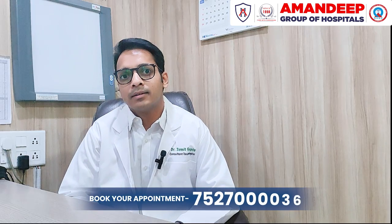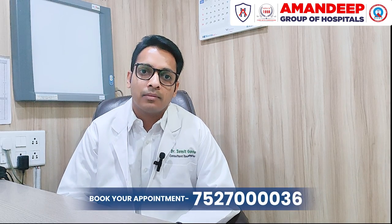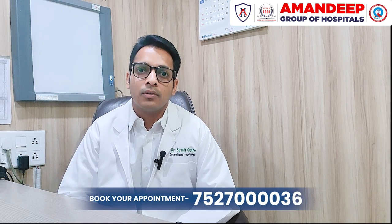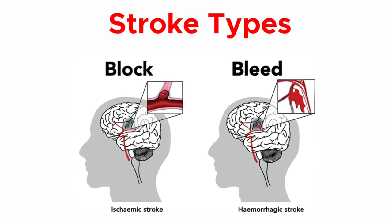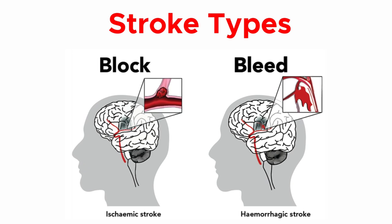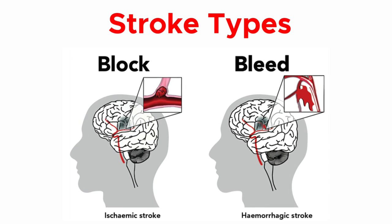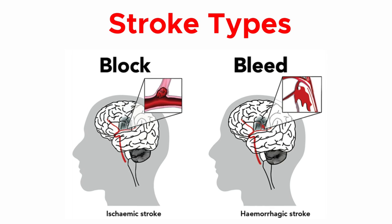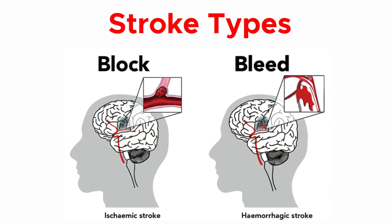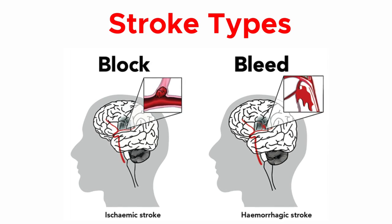Stroke, as we know, is one of the leading causes of death and disability worldwide, so we need to be aware of it. Stroke can be mainly of two types. One is ischemic stroke, which means there is clotting — thrombosis — in the brain, cutting off blood circulation to a region. The second is hemorrhagic stroke, which means there is bleeding over or in the brain.